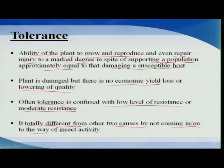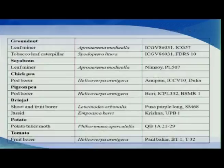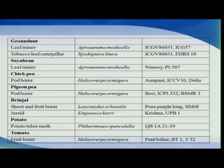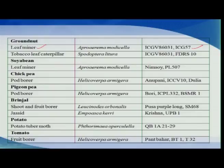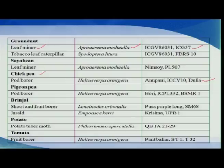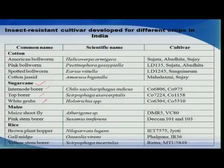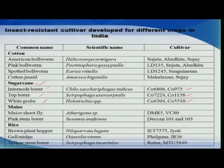This table indicates some of the crops which have been developed showing resistance against various insect pests. For example, in groundnut against leaf miner, we have the ICGV varieties which have been developed to impart resistance. Similarly, in chickpea against pod borer, some varieties have been developed, and for sugarcane, for several pests, we have the Co-varieties which are quite specific in imparting resistance against these pests.